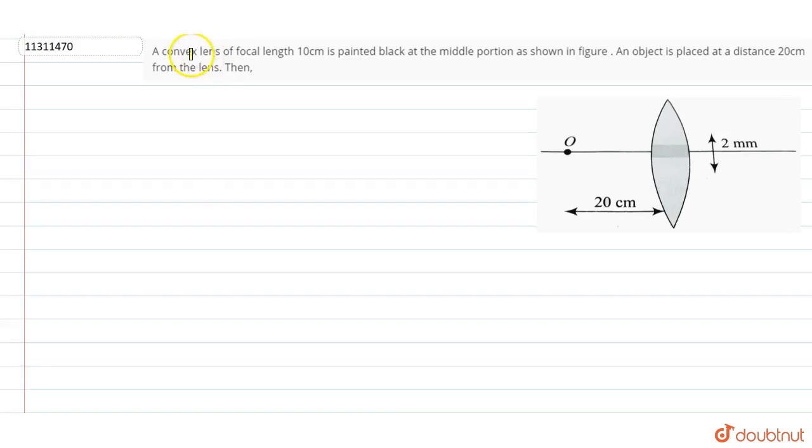Question: A convex lens of focal length 10 cm is painted black at the middle portion as shown in the figure. An object is placed at a distance of 20 cm from the lens.